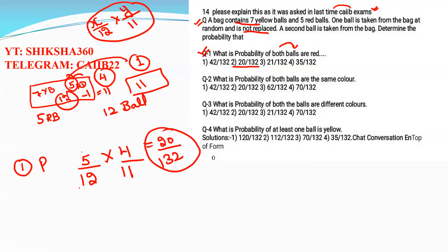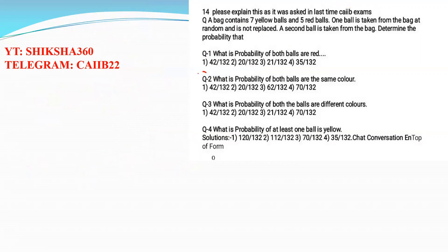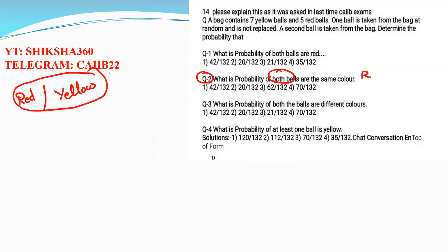So the answer for question one is option B — 20/132. Now question number two: what is the probability that both the balls are of the same color? Either both balls are red or both balls are yellow. When both balls are red, we already know that is 5/12 × 4/11.